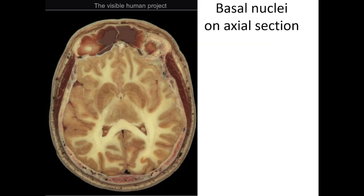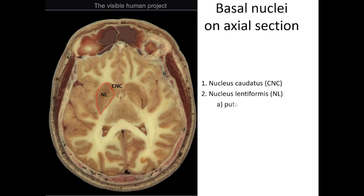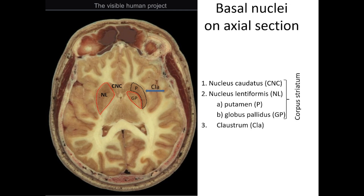Here are the basal nuclei on an axial section of the brain. Number 1 is Nucleus caudatus — CNC, meaning caput nuclei caudati. Number 2 is Nucleus lentiformis, which consists of putamen and globus pallidus. These four structures are combined in corpus striatum. Number 3 is Claustrum, CLA. And number 4 is Nucleus amygdaloideum, which is not shown in this section because of its location in another plane.